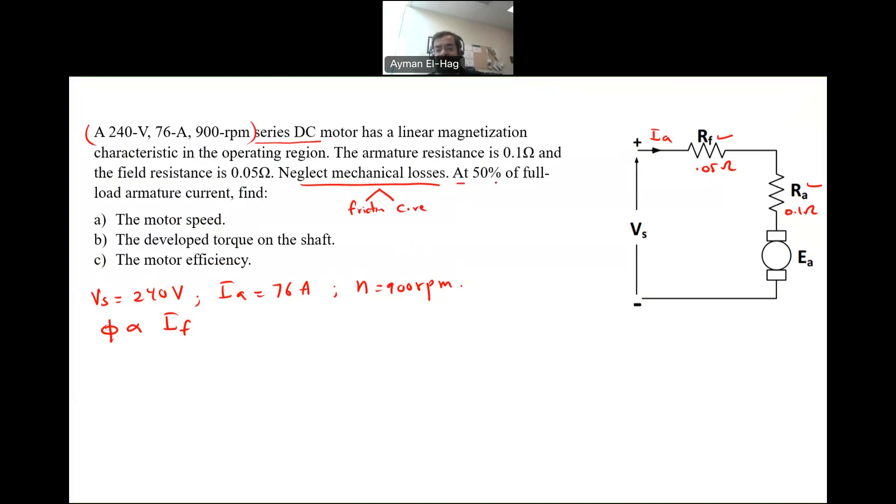At 50% of full load, when the load is 50%, so this is the 100%. At 50% of load armature current, when the current drops from 100% to 50%, we need to find the motor speed, developed torque, and the motor efficiency.